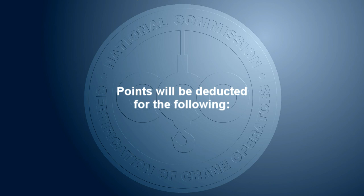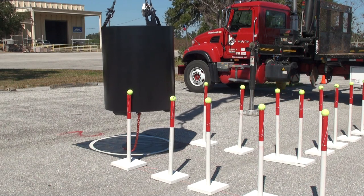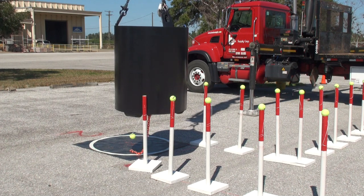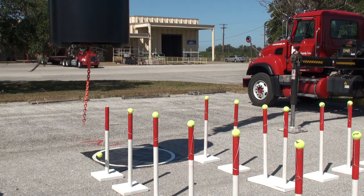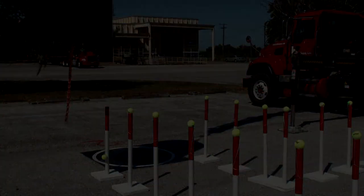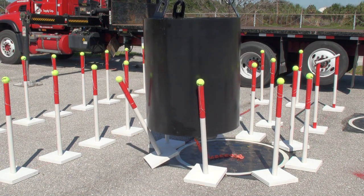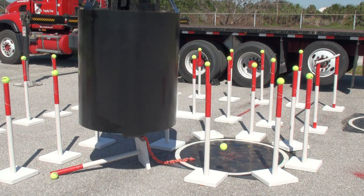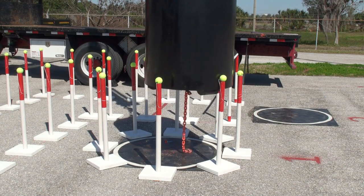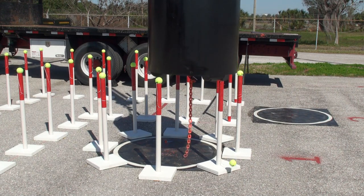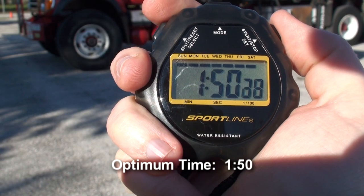Points will be deducted for the following: test weight or chain touching any part of the course, truck, or ground outside of the designated area; knocking over any poles or tennis balls surrounding designated area 1; exceeding optimum time.